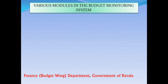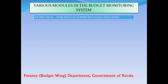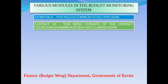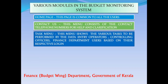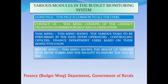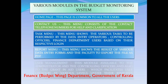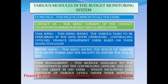Now we may go through the various modules in the Budget Monitoring System. The Home Page is common to all users. Contact Us consists of contact telephone numbers for help and clarification. The Task Menu shows the various tasks to be performed by the Data Entry Operators, Controlling Officers, and Finance Department users based on their respective login. The Report Menu shows the result of various data entry forms and the facility to export the file as PDF. User Management is available to the Administrator, the Controlling Officers, and also the Grant-in-Aid users, facilitating user creation at various levels under their respective user control.